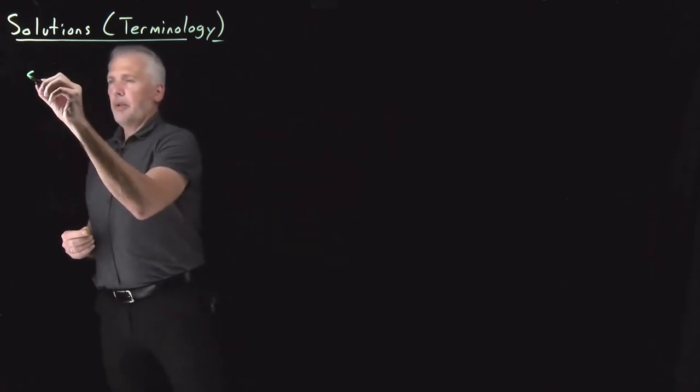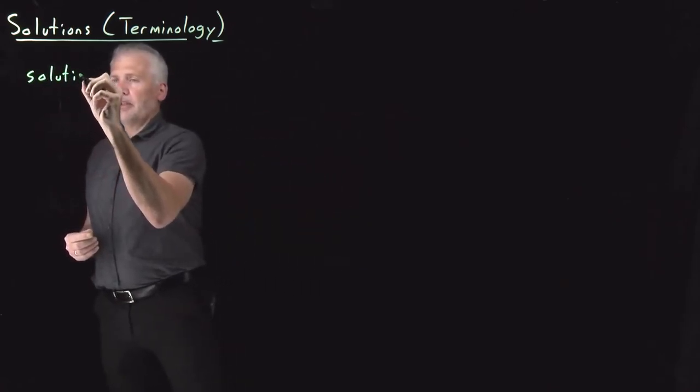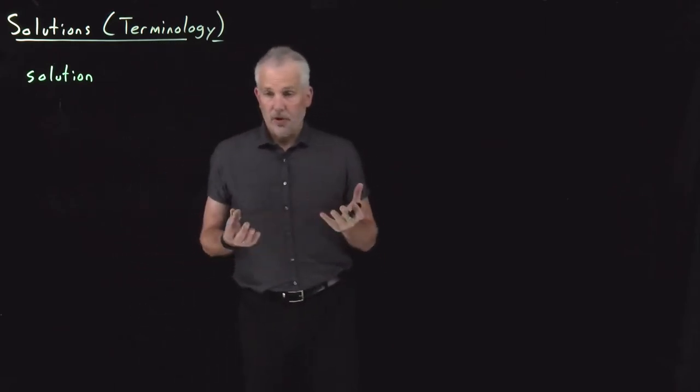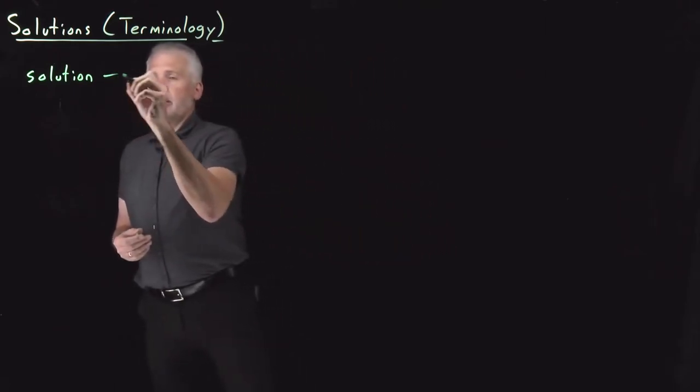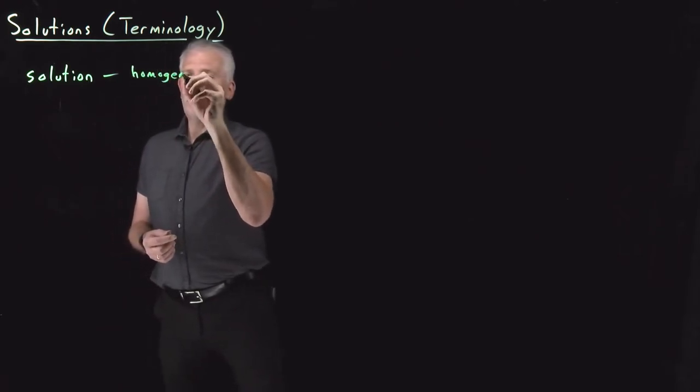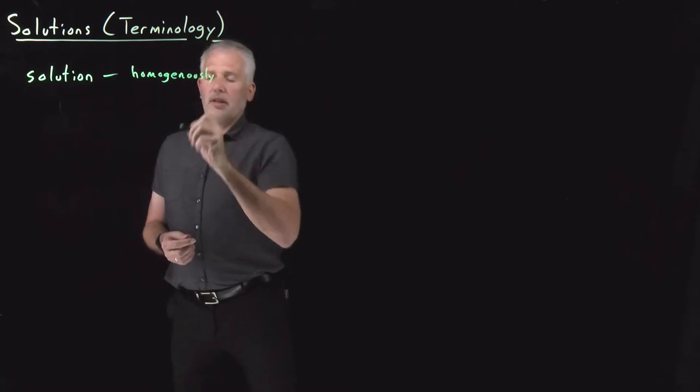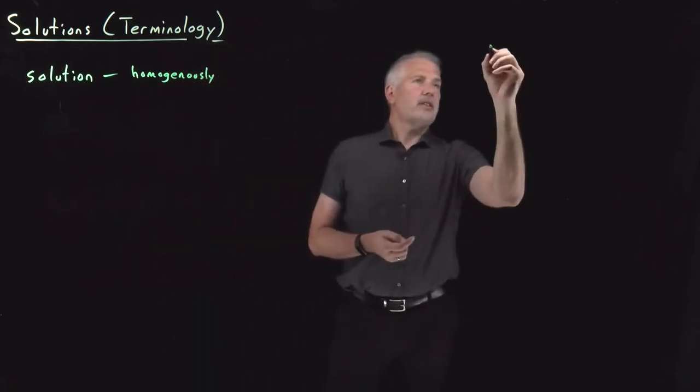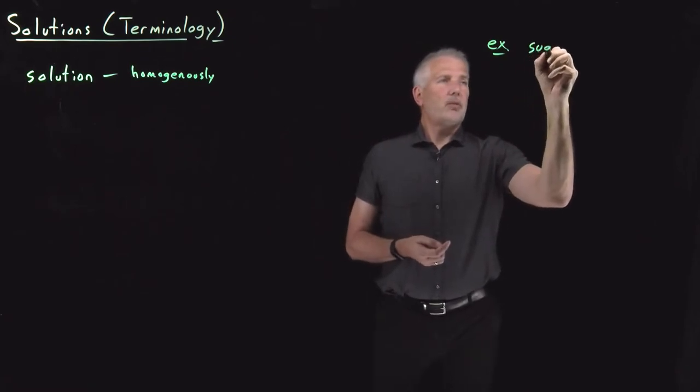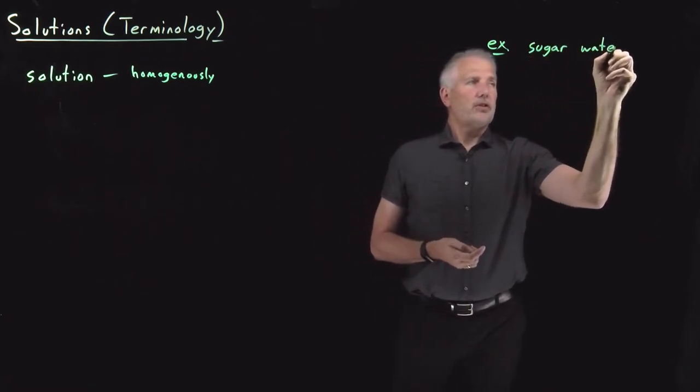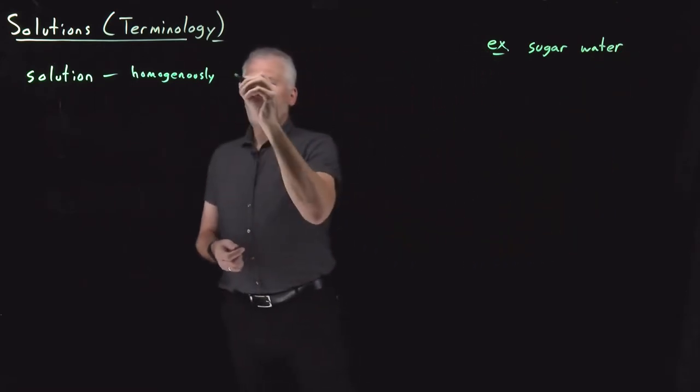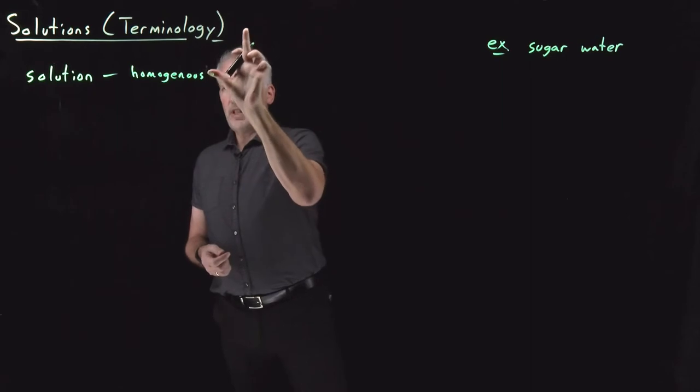First question is maybe what is a solution? A solution is a mixture of two substances in which, importantly, one substance is homogeneously dispersed within the other. So you're familiar with solutions. Let's take as our first example, say, sugar and water. If you dissolve some sugar in water, you've created a solution, a homogeneous mixture.